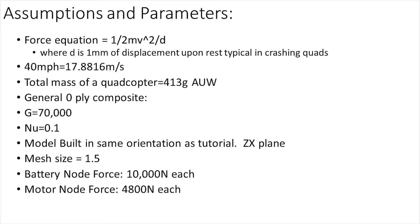The parameters I used and assumptions are as follows. I assumed that a typical crash in a race would be around 40 miles per hour. The total mass of the quadcopter was around 450 grams all up weight which includes the battery. I used a composite material with a general zero ply with a G of 70,000 and a nu of 0.1.